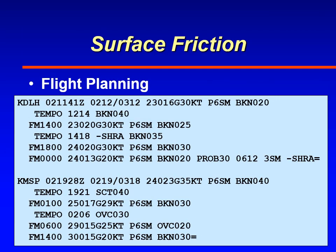Here are the TAFs for the area — Duluth and Minneapolis. You can see the winds are forecasted to be gusting up to 35 knots. During a good chunk of the day the winds will be less than 25, but there are peaks where they're greater than 30 or 35 knots.